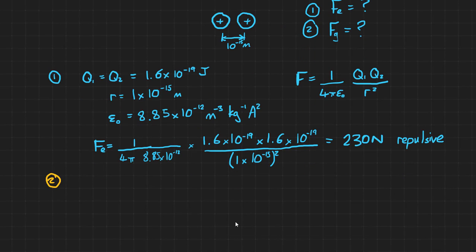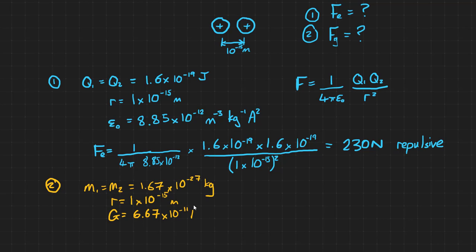For part 2 we're going to use Newton's law of gravitation. We know that M₁ equals M₂, which is equal to the mass of a proton, which is 1.67 × 10⁻²⁷ kilograms. The separation is still 1 × 10⁻¹⁵ metres. And the gravitational constant, G, is 6.67 × 10⁻¹¹ Nm²kg⁻². Again, don't worry about the weird unit.